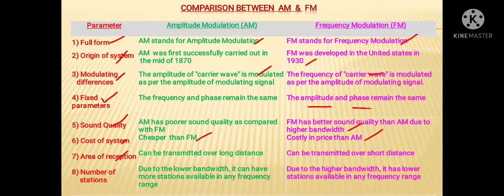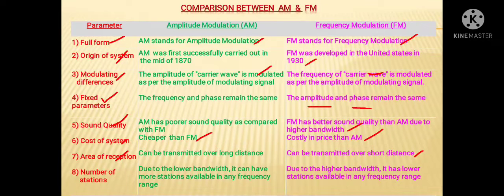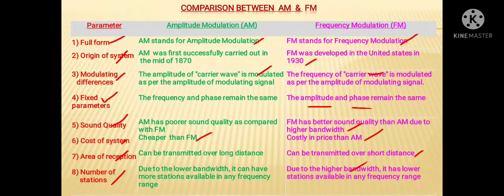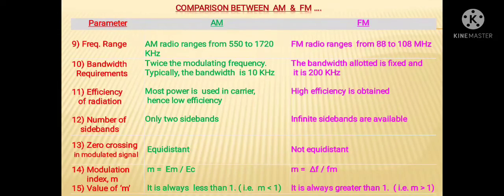About area of reception, AM can be transmitted over long distances, whereas FM can be transmitted over short distances on the curvature of the Earth. About number of stations, due to lower bandwidth, AM can have more stations available in any frequency range, whereas due to higher bandwidth, FM has fewer stations available in any frequency range.